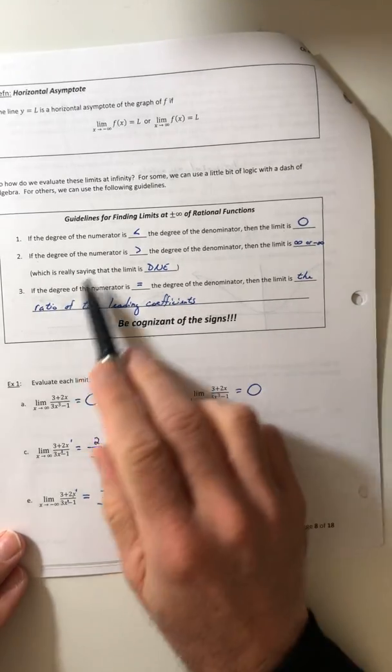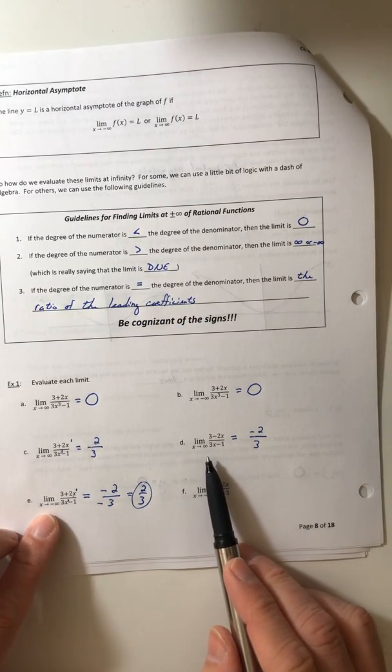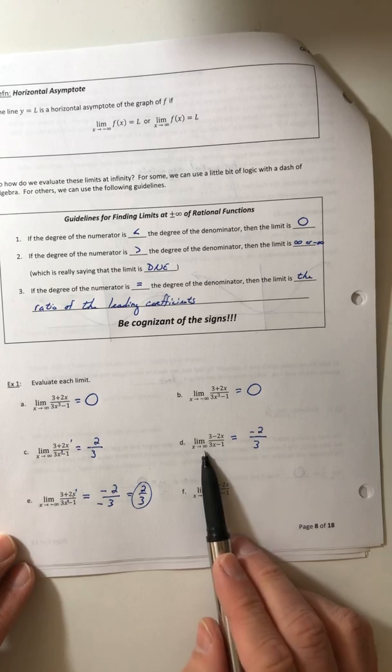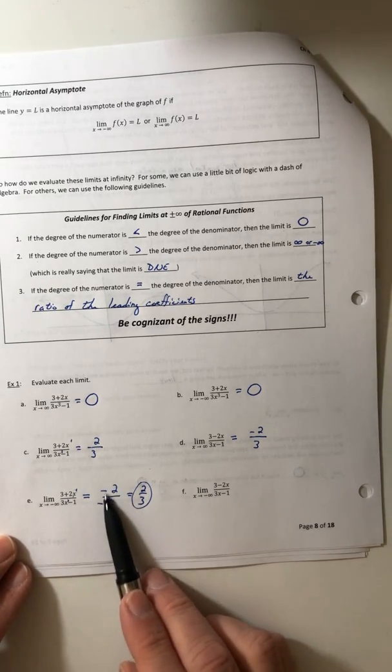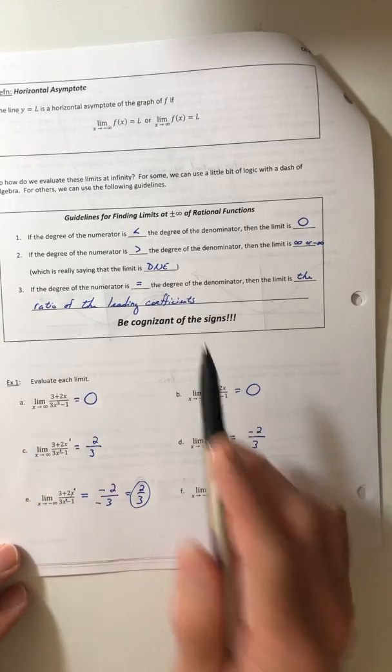So when you're looking at the degrees, you know, it's not really going to matter if it's going to go off to positive infinity or negative infinity, because the signs are going to work out and give you that same ratio of the leading coefficients.